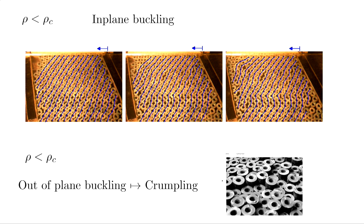Above rho-c, something different happens. When you go above a particular critical density of packing, the system packs but then crumples out. In the little space between two cylinders, particles tend to pop up and down. You get a transition from in-plane buckling to a popping transition - a crumpled zone. The interesting part is what happens below or above this particular transition density.